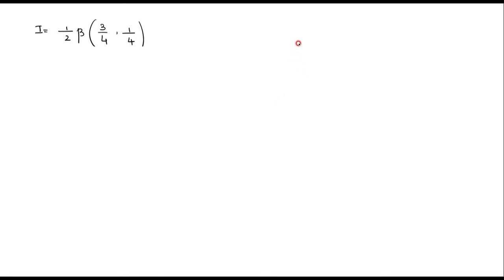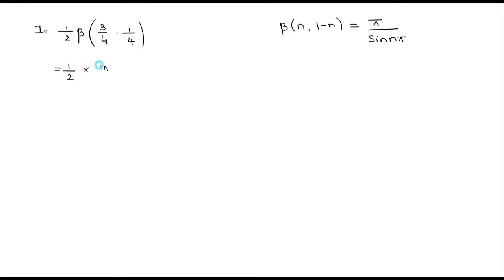In beta gamma functions, we have the result: beta of n, (1 minus n) — if the sum of the two numbers equals 1 — we can directly use pi divided by sin(n*pi). Here, if I consider n as 1/4 or 3/4, the sum of these two numbers is equal to 1. Taking n as 1/4, I can write this as 1/2 times pi divided by sin(pi/4). Since sin(45 degrees) equals 1/root 2, it is 1/root 2.